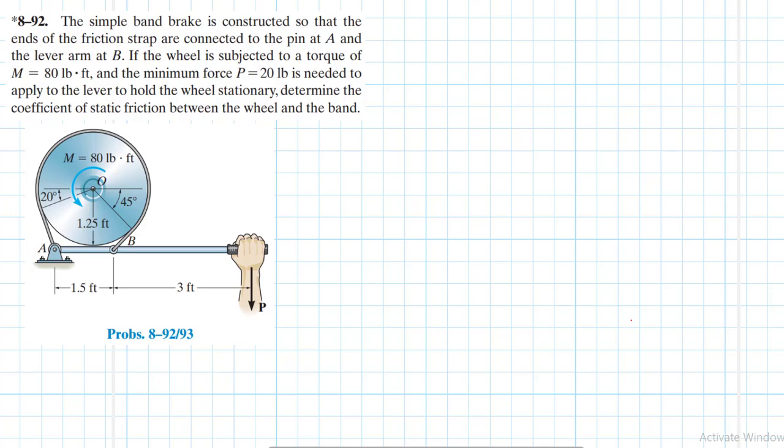Welcome to this screencast. The problem reads: a simple band brake is constructed so that the ends of the friction strap are connected to a pin at A and the lever arm at B. If the wheel is subjected to a torque of M equal to 80 pound-feet and a minimum force of P equal to 20 pounds is needed on the lever to hold the wheel stationary, determine the coefficient of static friction between the wheel and the band.